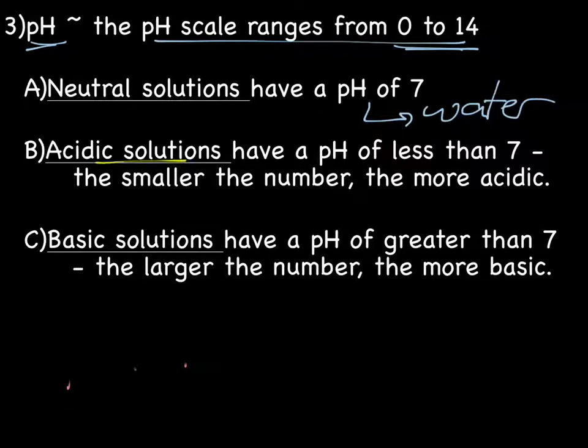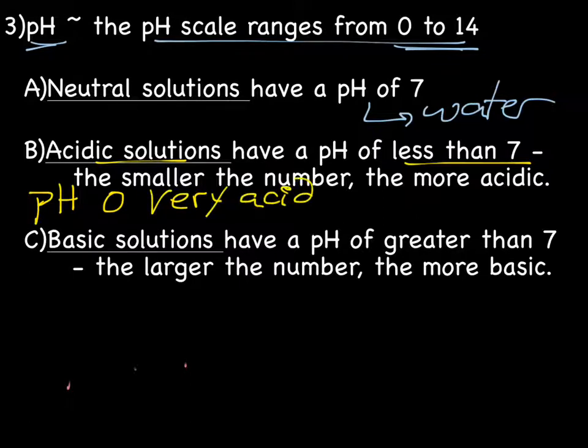Acidic solutions have a pH of less than 7. And the smaller the number, the more acidic. So something with a pH of 0 would be very acidic. And something with a pH of, let's say, 6 would be barely acidic.